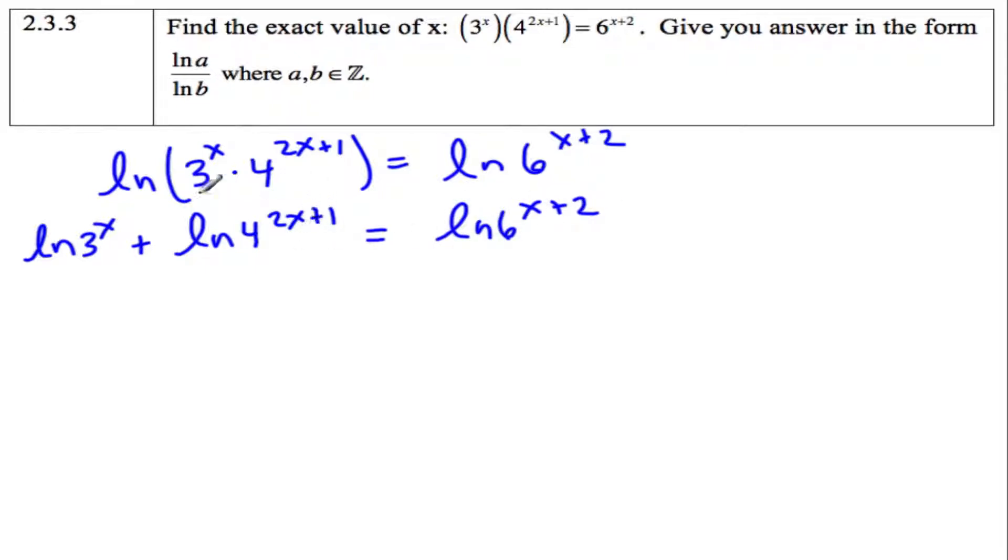Now I'm going to bring down these exponents, so I have x ln 3 plus, remember your parentheses here because we have two pieces here, ln 4 equals x plus 2, again parentheses, times ln 6.